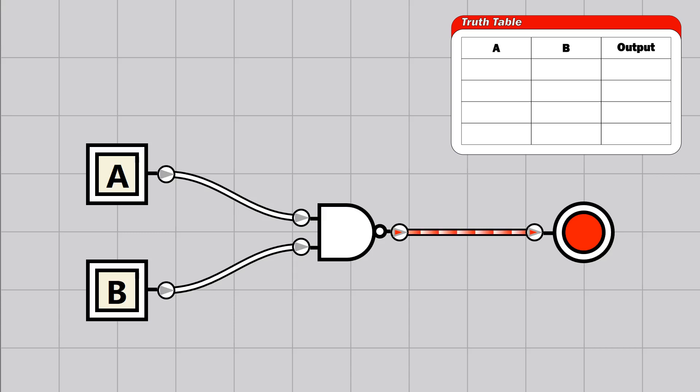In our gate, when A and B were off the output was on. When A was on and B was off, the output was also on. The reverse, when B was on and A was off, the output was still on. But when A and B were on, the output finally turned off.